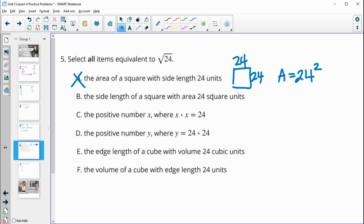The side length of a square with area of 24. So yes, if the area is 24 to go down to the side lengths, they'd have to be square root of 24 to multiply to get to 24. So that's true.